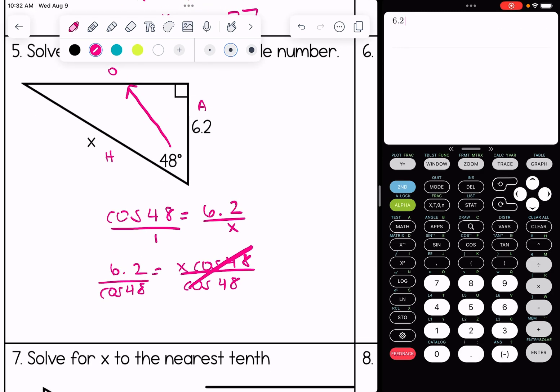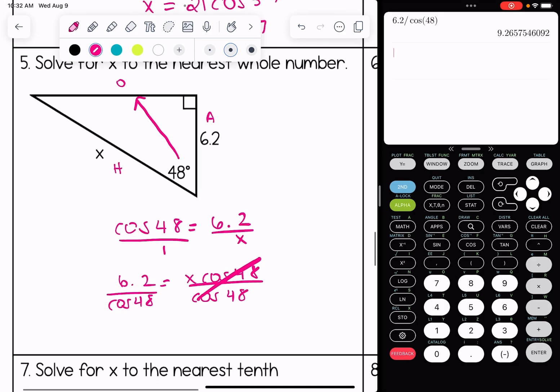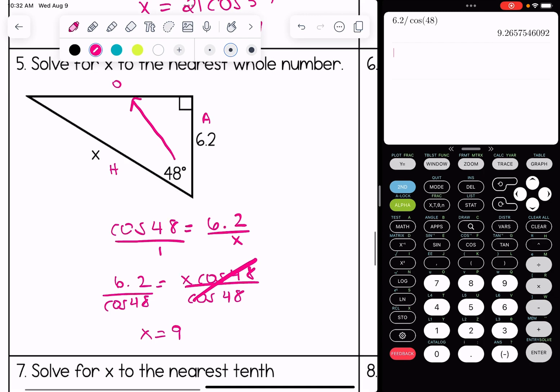We're looking to the nearest whole number here, so I get x is 9. A few more. Hopefully it's starting to seem repetitive.